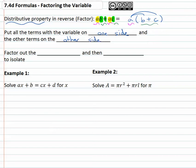Once we've done that, we can factor out the variable we are looking for, and that variable will be multiplied by something in parentheses. To undo the multiplication, we divide to isolate the variable.